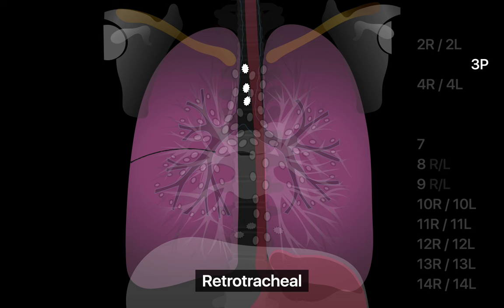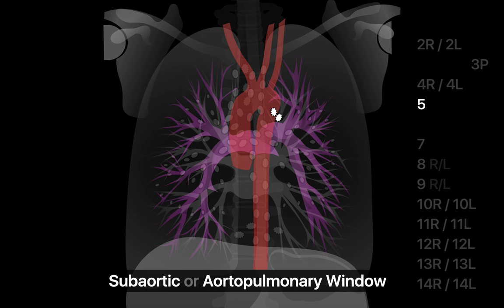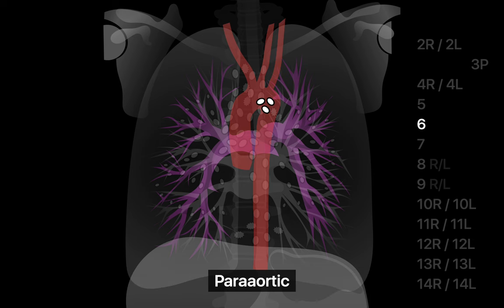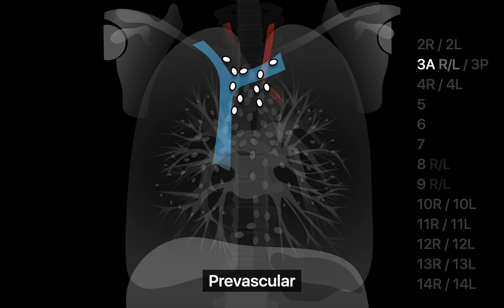Retrotracheal lymph nodes are immediately posterior to the trachea, station 3P. Subaortic lymph nodes are in the aortopulmonary window and lateral to the ligamentum arteriosum, station 5. Paraaortic lymph nodes are immediately anterior and lateral to the ascending aorta and aortic arch, station 6. Moving into the anterior mediastinum, prevascular lymph nodes are in the anterior chest, anterior to the SVC and left carotid artery, station 3A — unofficially subdivided into right and left by some.